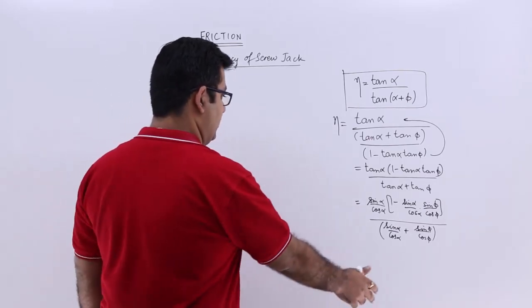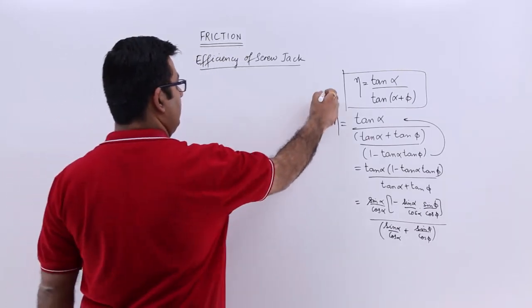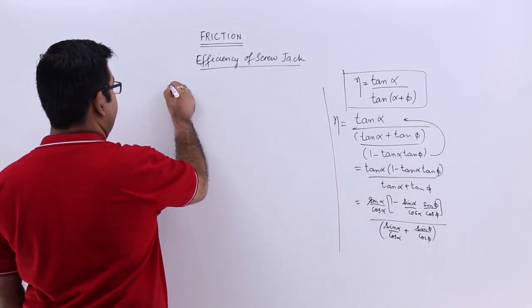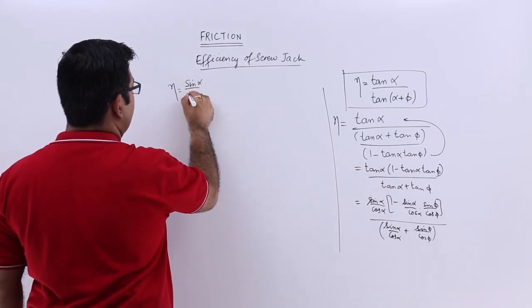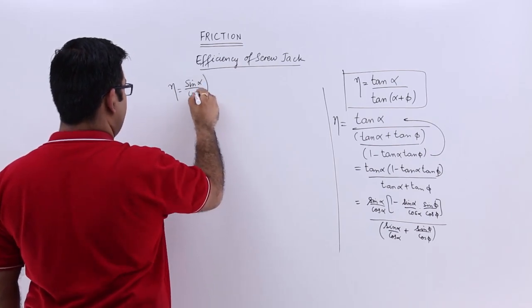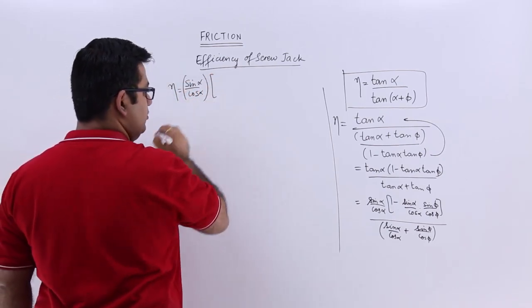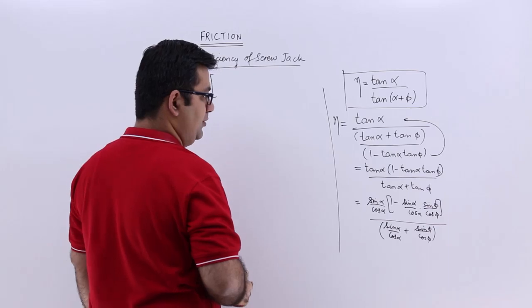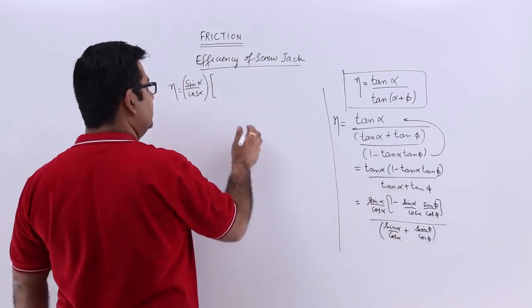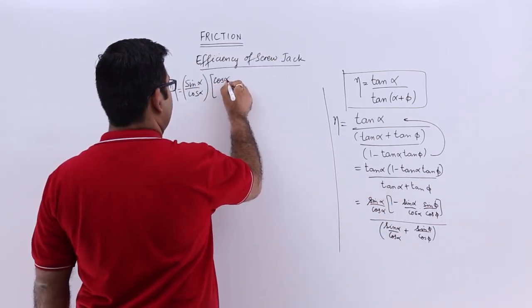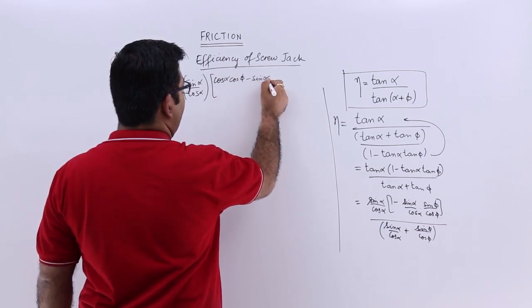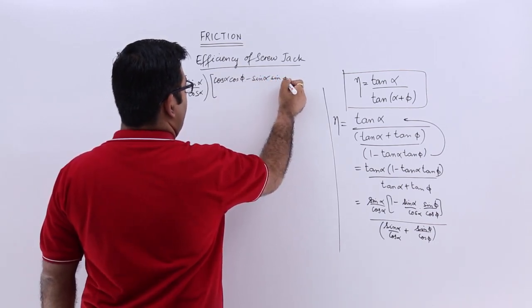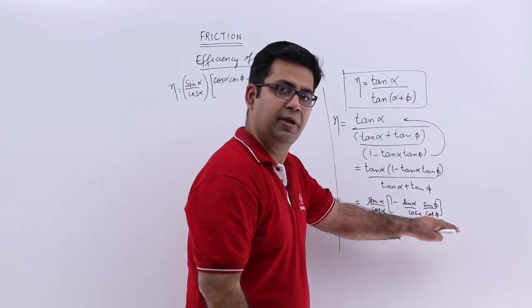Just rearrange it. We will have sin alpha by cos alpha into, this would be cos alpha cos phi, minus sin alpha sin phi divided by cos alpha cos phi.